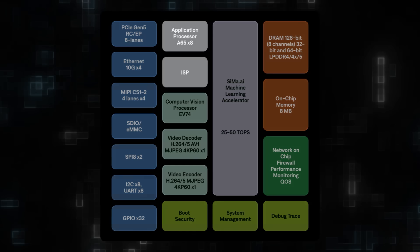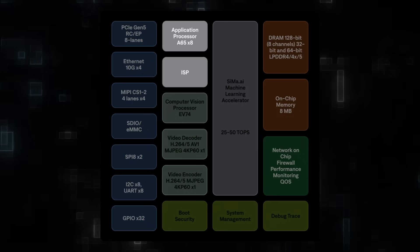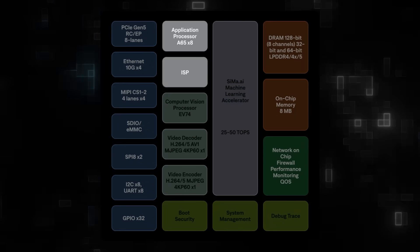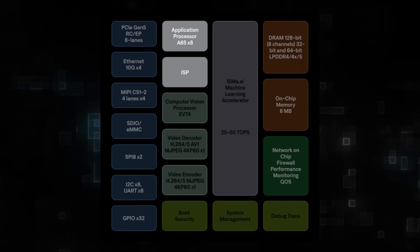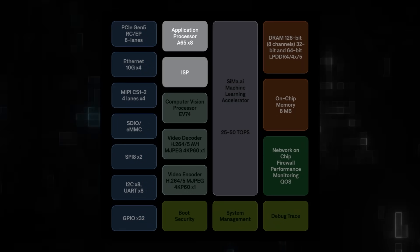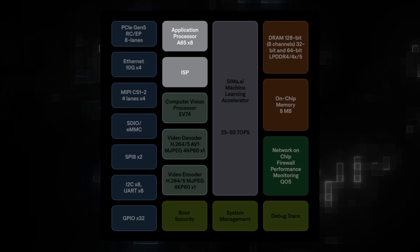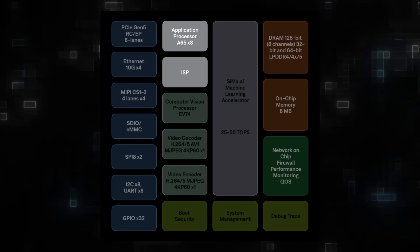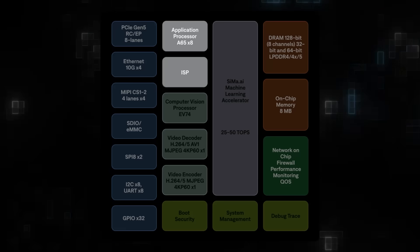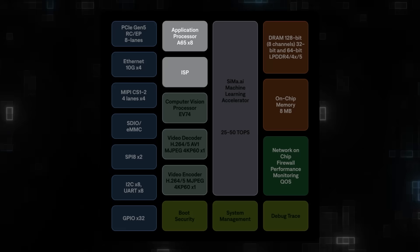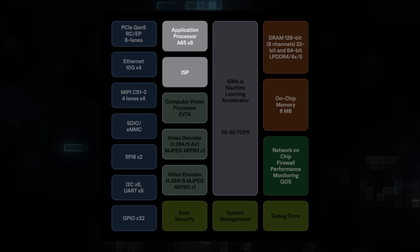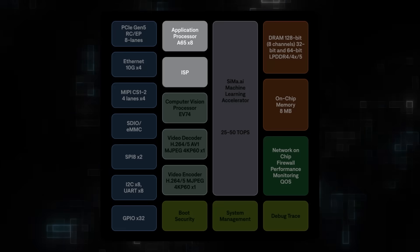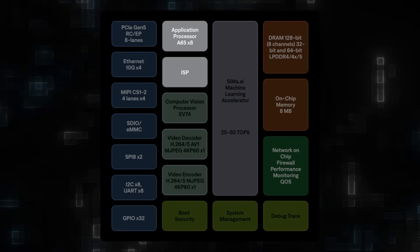First, we have the application processor — an ARM A65-based general-purpose processor designed for managing system tasks, application execution, and communication with peripherals. With four cores and eight threads, it provides the flexibility needed for a wide range of embedded applications.